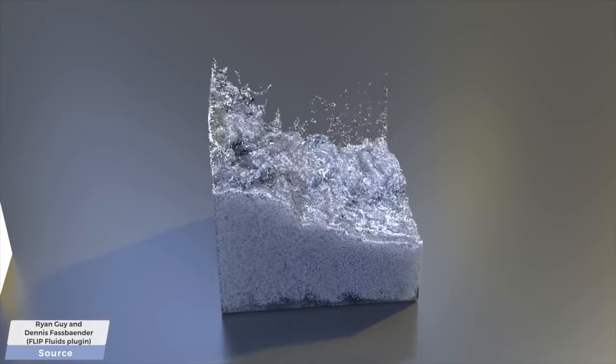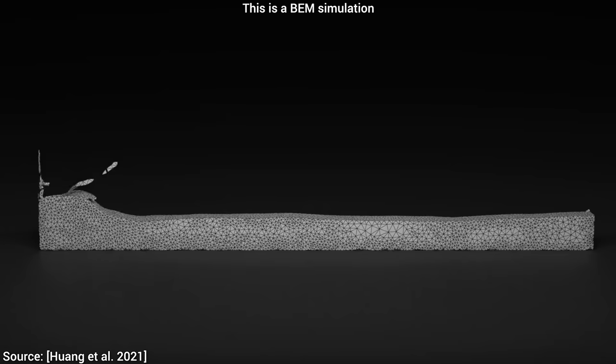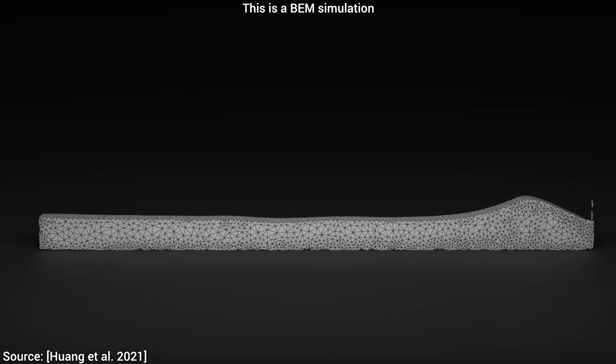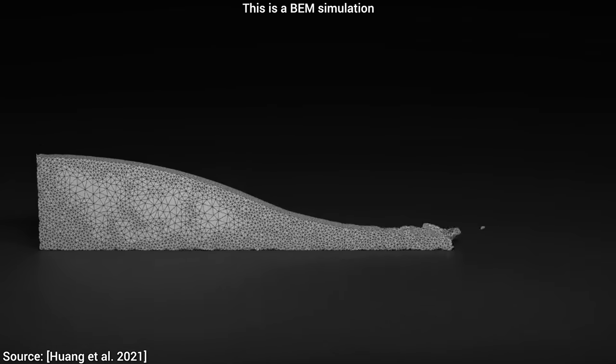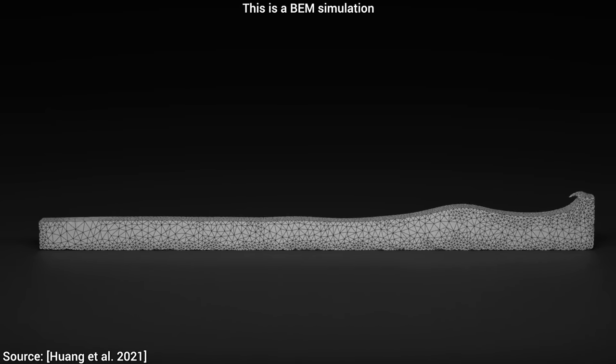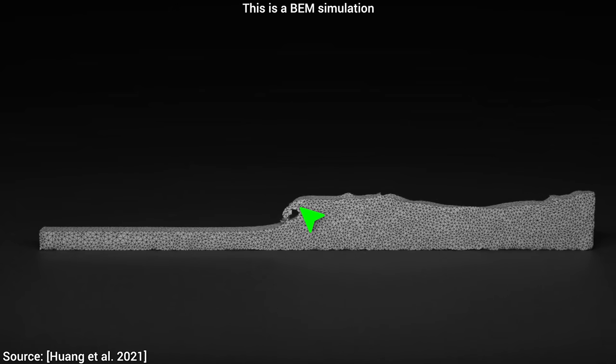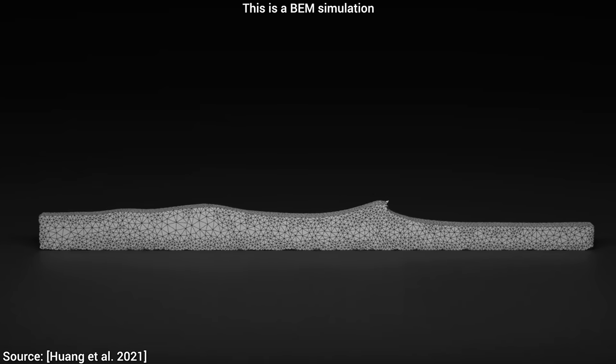No matter, because there are other methods to handle that, for instance, the boundary element method that we just mentioned, BEM in short. It is great in these cases, because the BEM variant that's been used in this paper simulates only the surface of the liquid, and for a large ocean, the surface is much, much smaller than the volume.